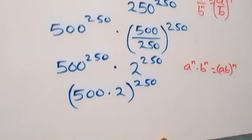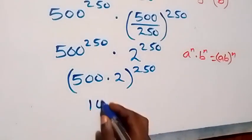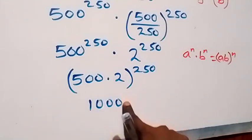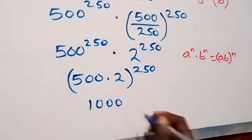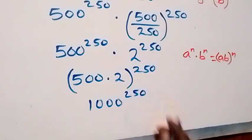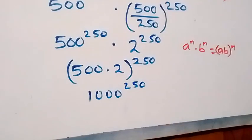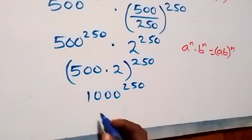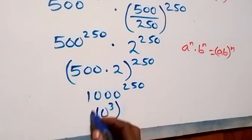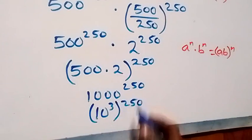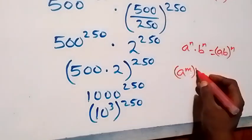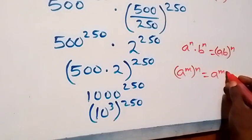500 times 2 gives us 1000, so we have 1000 raised to power 250. Now, 1000 can be expressed as 10 raised to power 3, so we have 10 raised to power 3, all raised to power 250. From the law of indices, a raised to power m, raised to power n, equals a raised to power mn.